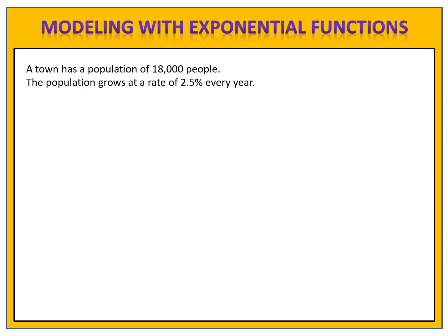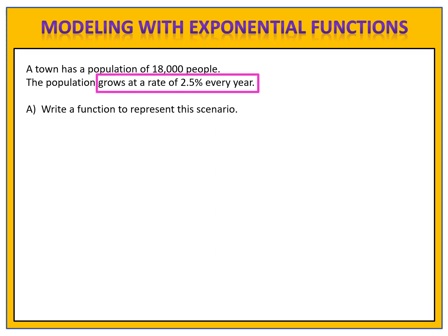In our first exercise, a town has a population of 18,000 people. The population grows at a rate of 2.5% every year. We want to write a function that represents this scenario. Notice that the rate of change — the rate of growth — is by a percentage every year. Because of this, we have an exponential function, y equals a times b to the x. In order to write this function, we need two things: the a value and the b value.